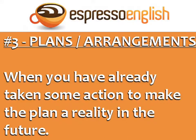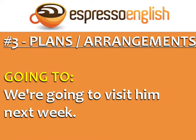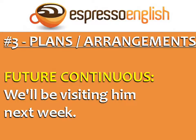Now let's talk about plans and arrangements. Plans and arrangements are when you have already taken some action to make the plan a reality in the future. There are three possible tenses to use: going to, present continuous, or future continuous. For example, you can say 'We're going to visit him next week,' 'We're visiting him next week,' or 'We'll be visiting him next week.'